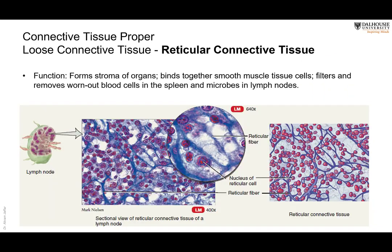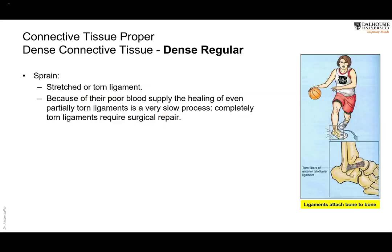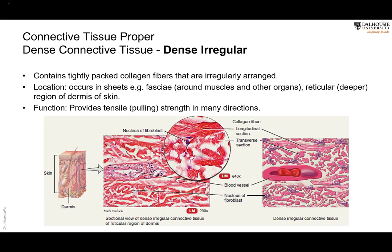There is also reticular connective tissue. Then we have dense connective tissue, which contains very little ground substance and is packed with many collagen fibers. In tendons and ligaments, the fibers run in one direction, making the tissue very strong. Tendon attaches muscle to bone, while ligament attaches bone to bone. This type is avascular or has very low blood supply.